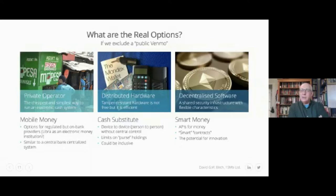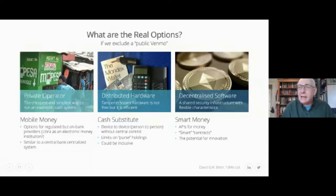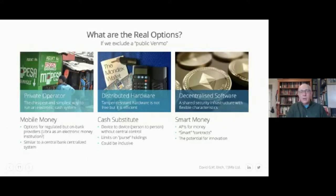Option two is the hardware solution — a cash substitute. A cash substitute allows for person-to-person, device-to-device payments. This is actually 25 years old: Mondex cards, Mondex keyrings, Mondex wallets enabled moving money from chip to chip. It depends on hardware remaining secure, but the chips used are the same ones used for chip-and-pin cards and SIM cards — if they weren't secure, all banks and mobile operators would already be out of business.